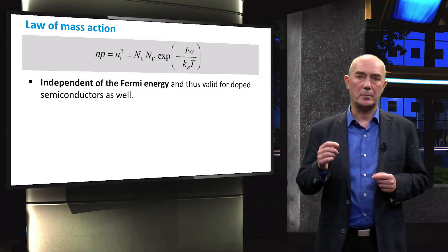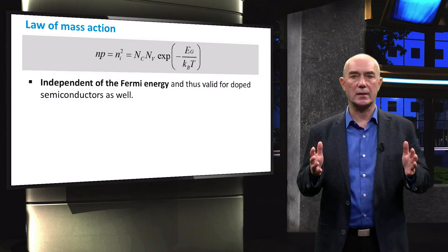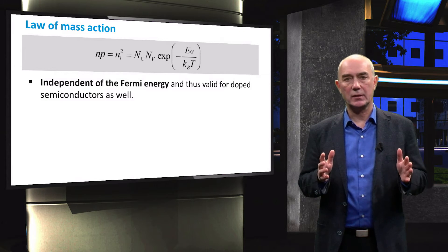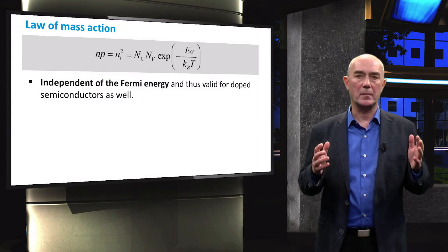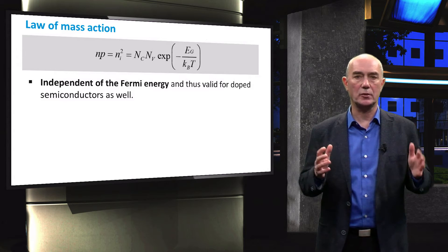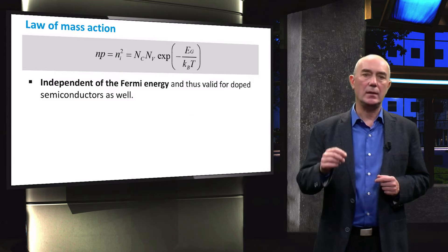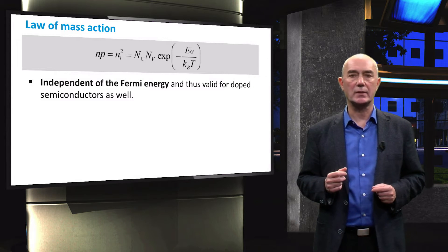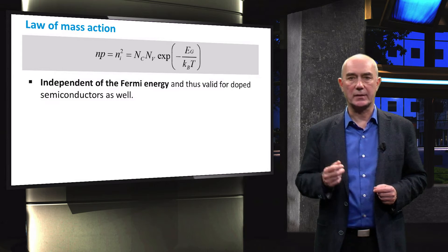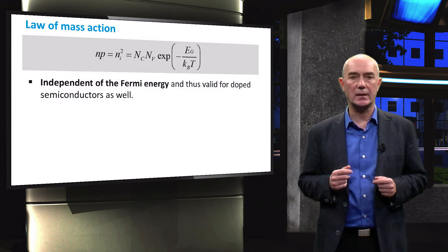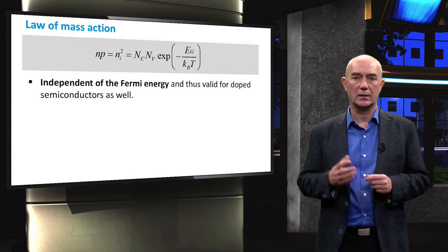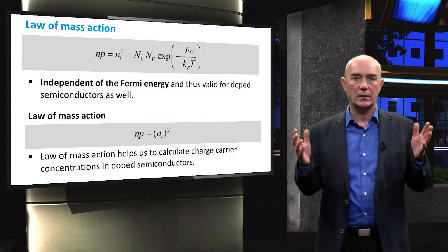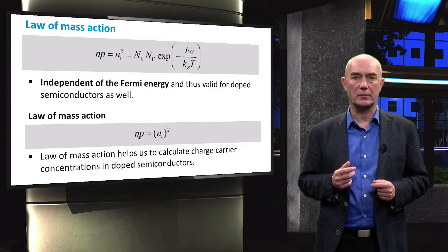As we saw in a previous video, the product of electron and hole concentrations in a semiconductor is independent of the position of the Fermi level energy. This same equation can be applied for doped semiconductors. N is the concentration of electrons in the conduction band, P is the concentration of holes in the valence band, and Ni is the intrinsic carrier concentration. Nc and Nv are the effective densities of states in the conduction and valence bands respectively. Eg is the band gap, Kb is the Boltzmann constant, and T is the temperature. This relation is called the law of mass action for semiconductors.